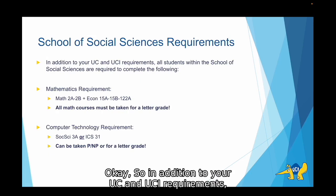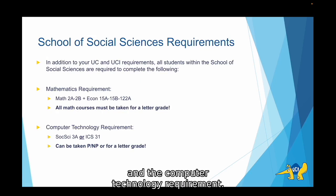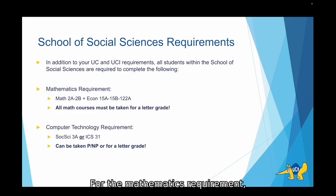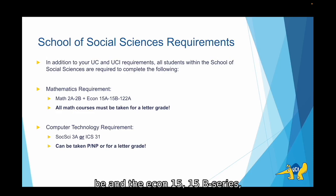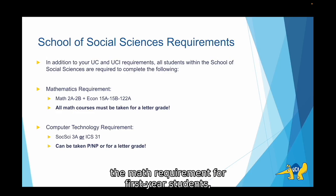In addition to your UC and UCI requirements, all students within the School of Social Sciences are required to complete the mathematics requirement and the computer technology requirement. As an economics major, you will have specific classes that you will need to take for these requirements, as these classes will also account for your major. For the mathematics requirement, you will have to take Math 2A, Math 2B, and the Econ 15A-15B series as well as Econ 122A. These will complete certain major requirements in addition to the math requirement.